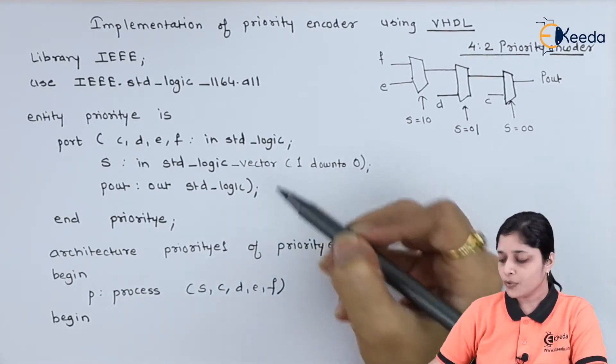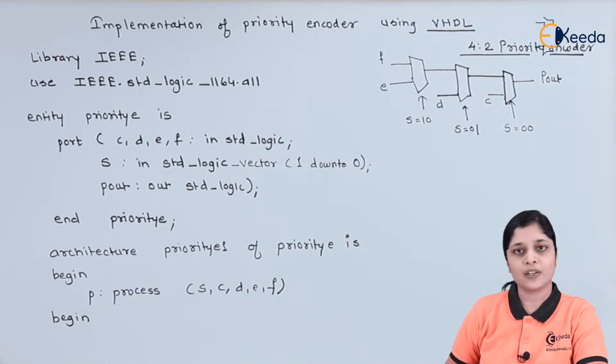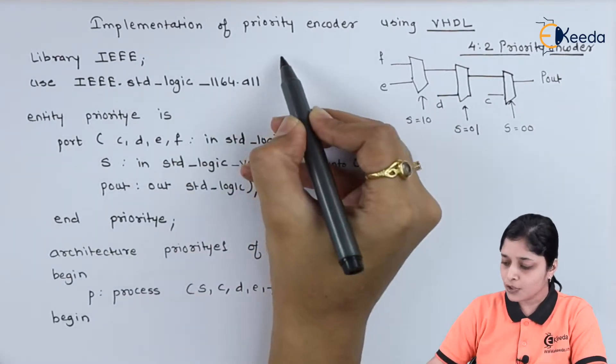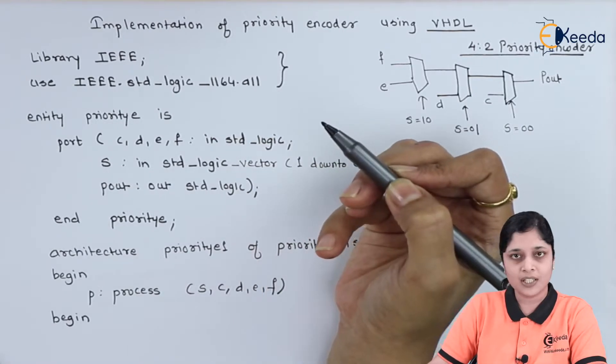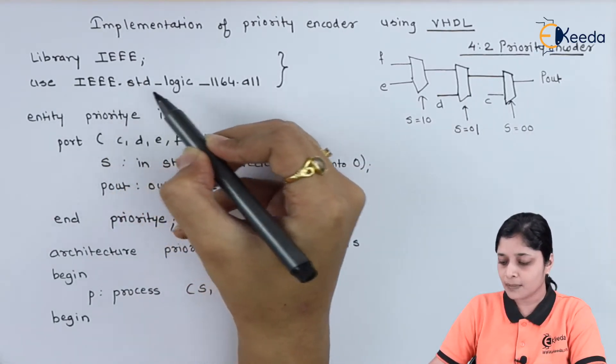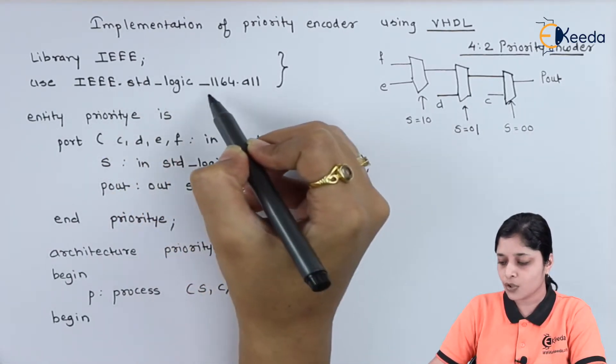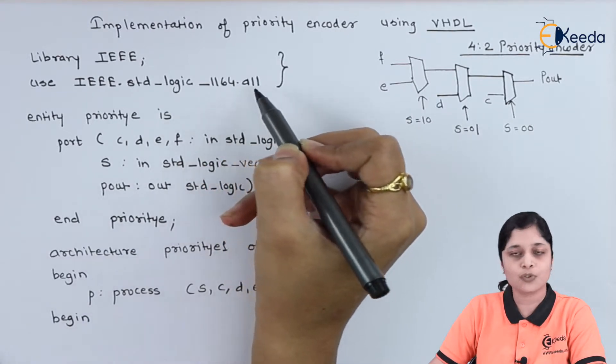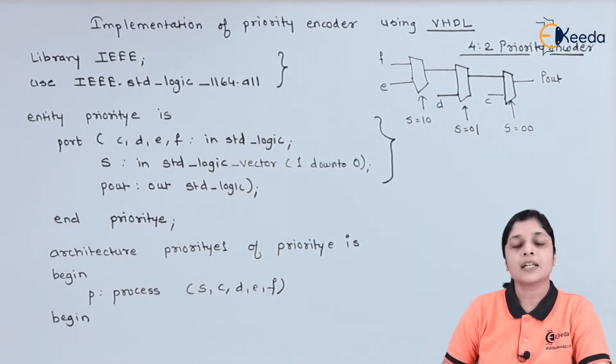We will focus on the design of priority encoder using VHDL. First of all, you have to mention the library, that is IEEE. Use IEEE.std_logic_1164.all. Then declaration of the entity comes.